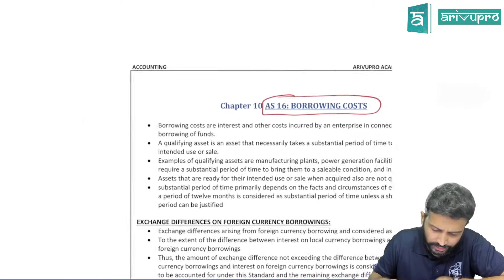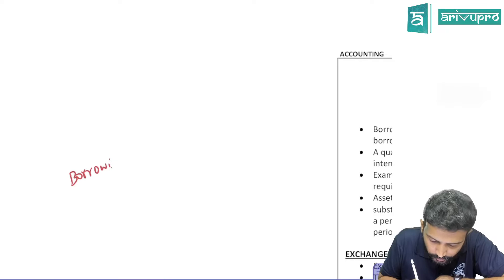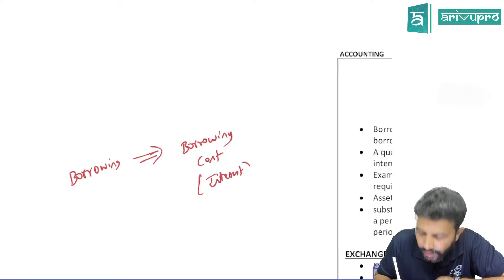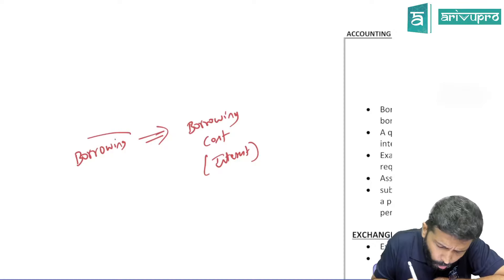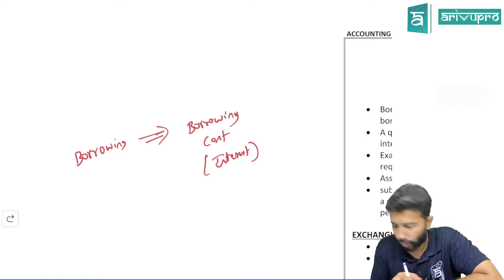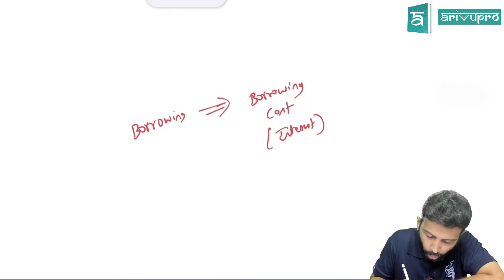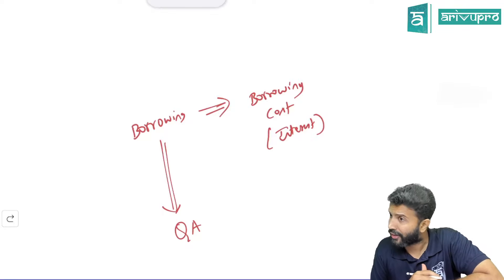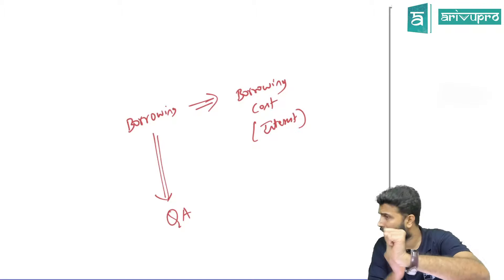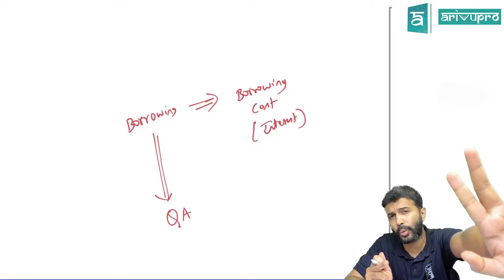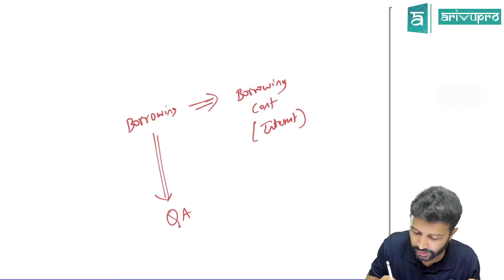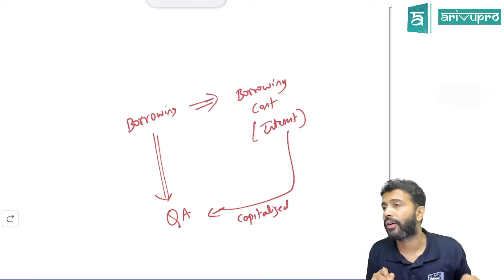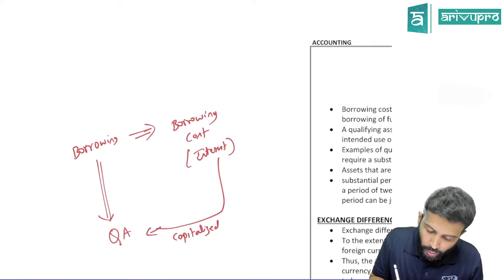If you have a borrowing, on this borrowing you will incur borrowing cost — which means interest. What they are trying to say is: check for what purpose did you take this borrowing. If this borrowing is incurred for something known as a qualifying asset — if this borrowing is incurred towards purchase, construction, acquisition, or production of a qualifying asset — then this interest cost will not go to P&L. Rather, it will be capitalized, meaning added to the cost of the qualifying asset itself.